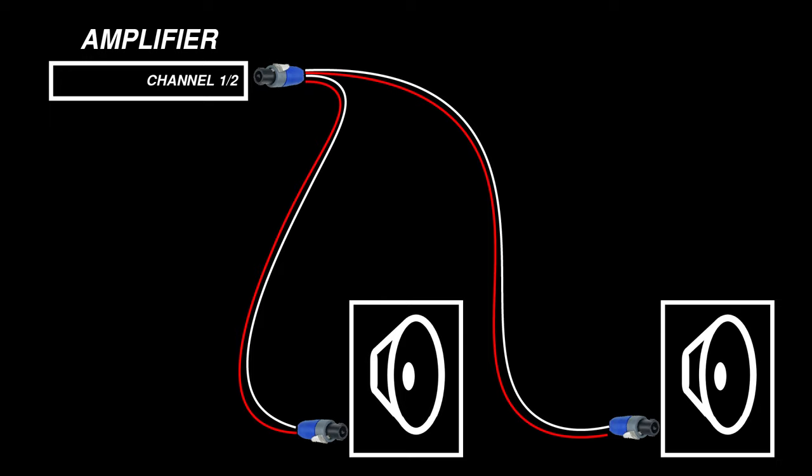Using an NL4 to dual NL2 breakout cable, you can split the two amplifier channels that we're running through a single NL4 connector out to two separate NL2 connectors.